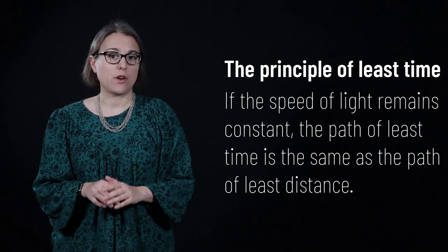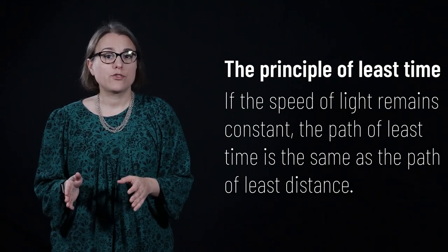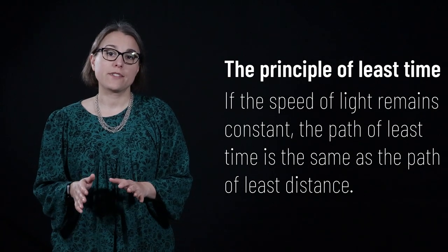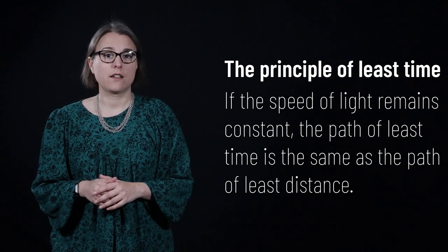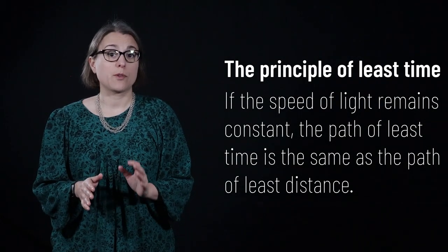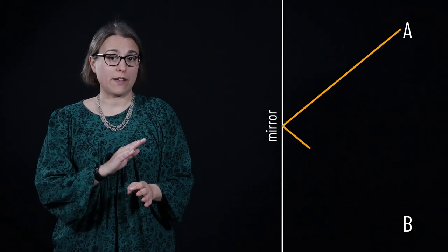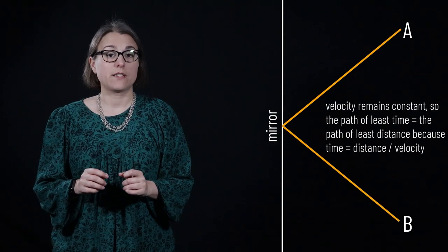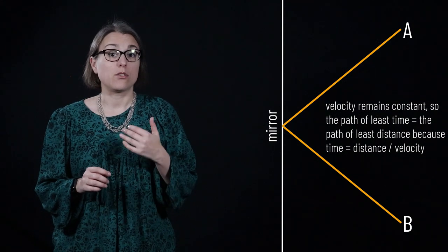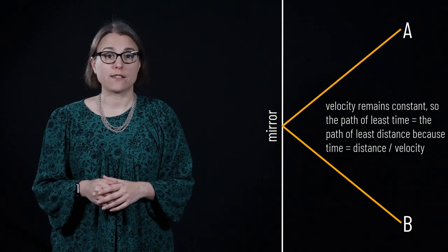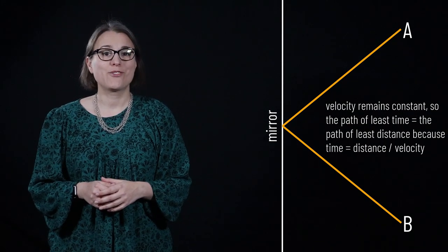When light bounces off of a surface, such as a mirror, but otherwise travels through the same medium, such as air, throughout its journey, the path of least time is the same as the path of least distance. Because the speed of light through a single medium remains constant, the fastest path will be the shortest path. Any path that is not the shortest distance will take longer, since time equals distance over velocity and velocity remains constant through a single medium.